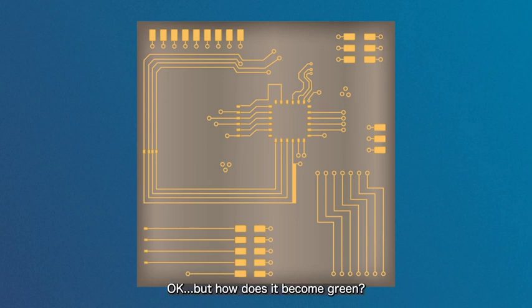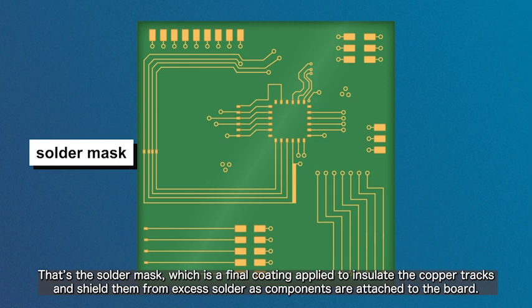Okay, but how does it become green? That's the solder mask, which is a final coating applied to insulate the copper tracks and shield them from excess solder as components are attached to the board.